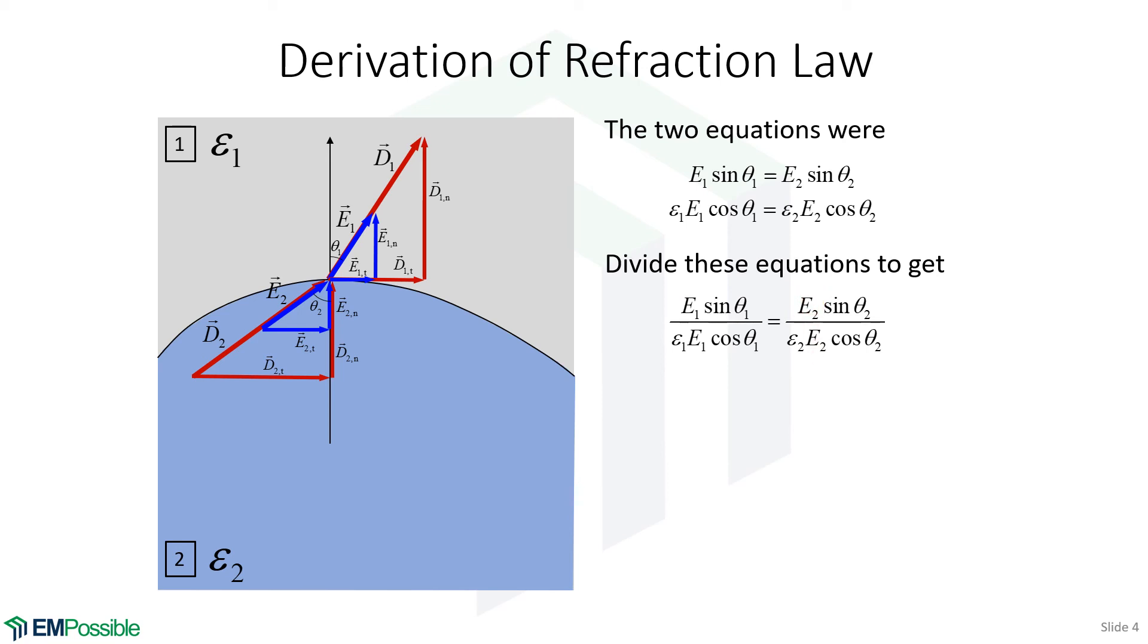That's great. We now have an equation without any electric field terms in it. And we can also see that sine over cosine is tangent, and another sine over cosine is tangent. So in the end, we can simplify this, and we get a single equation now that describes refraction of electrostatic fields.